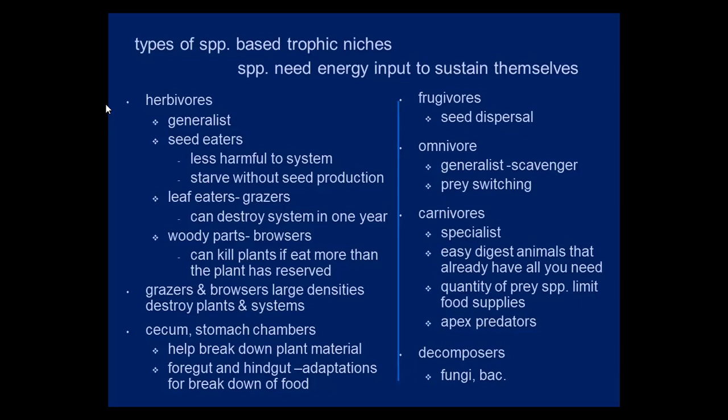A cecum is a stomach chamber that helps break down plant material through foregut and hindgut fermentation — these are just adaptations to break down food for different animals. Frugivores are fruit eaters, and they disperse seeds — they'll eat the fruit, and the seed may be excreted out, or they'll eat the fruit and toss off the seed.